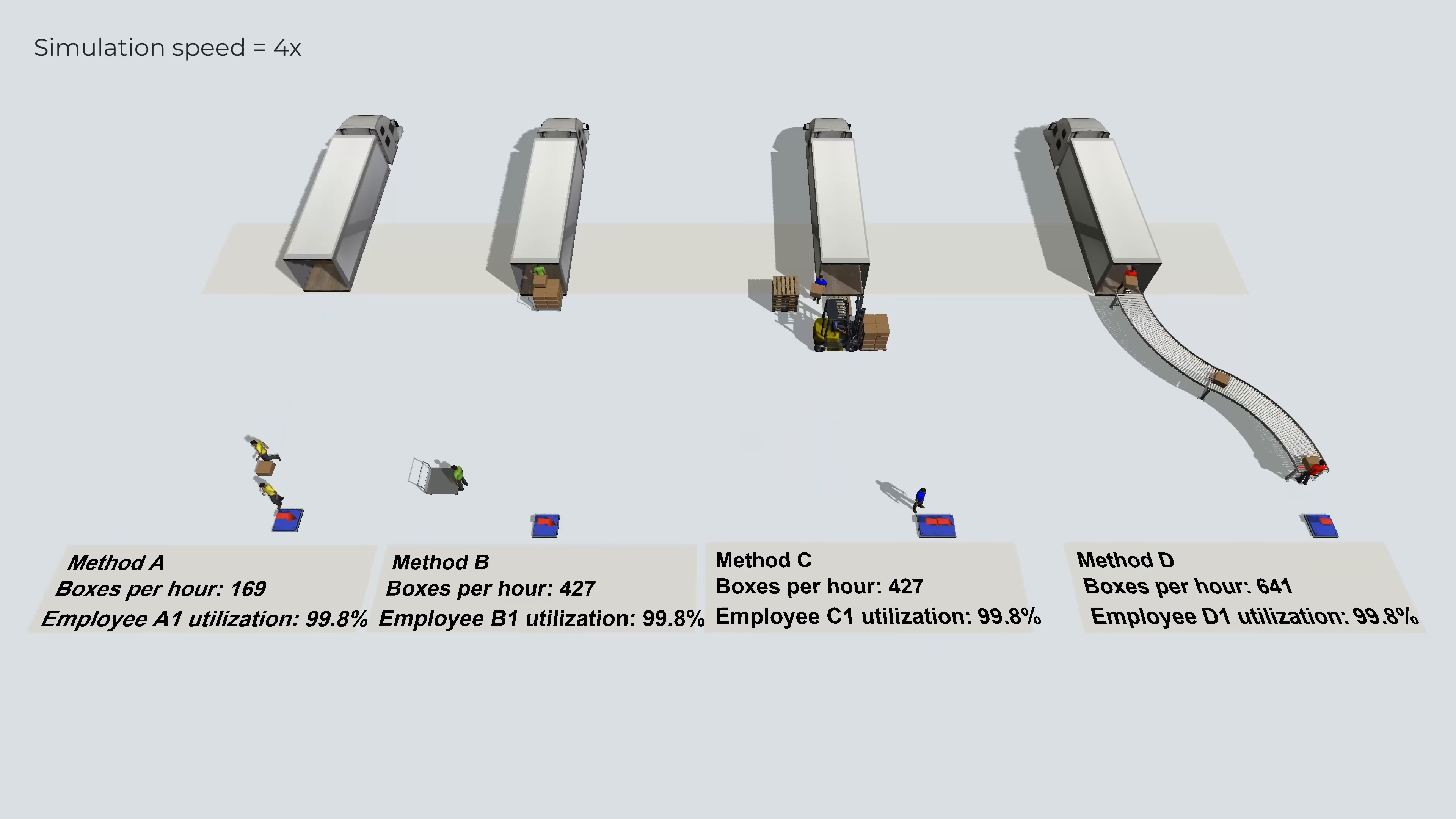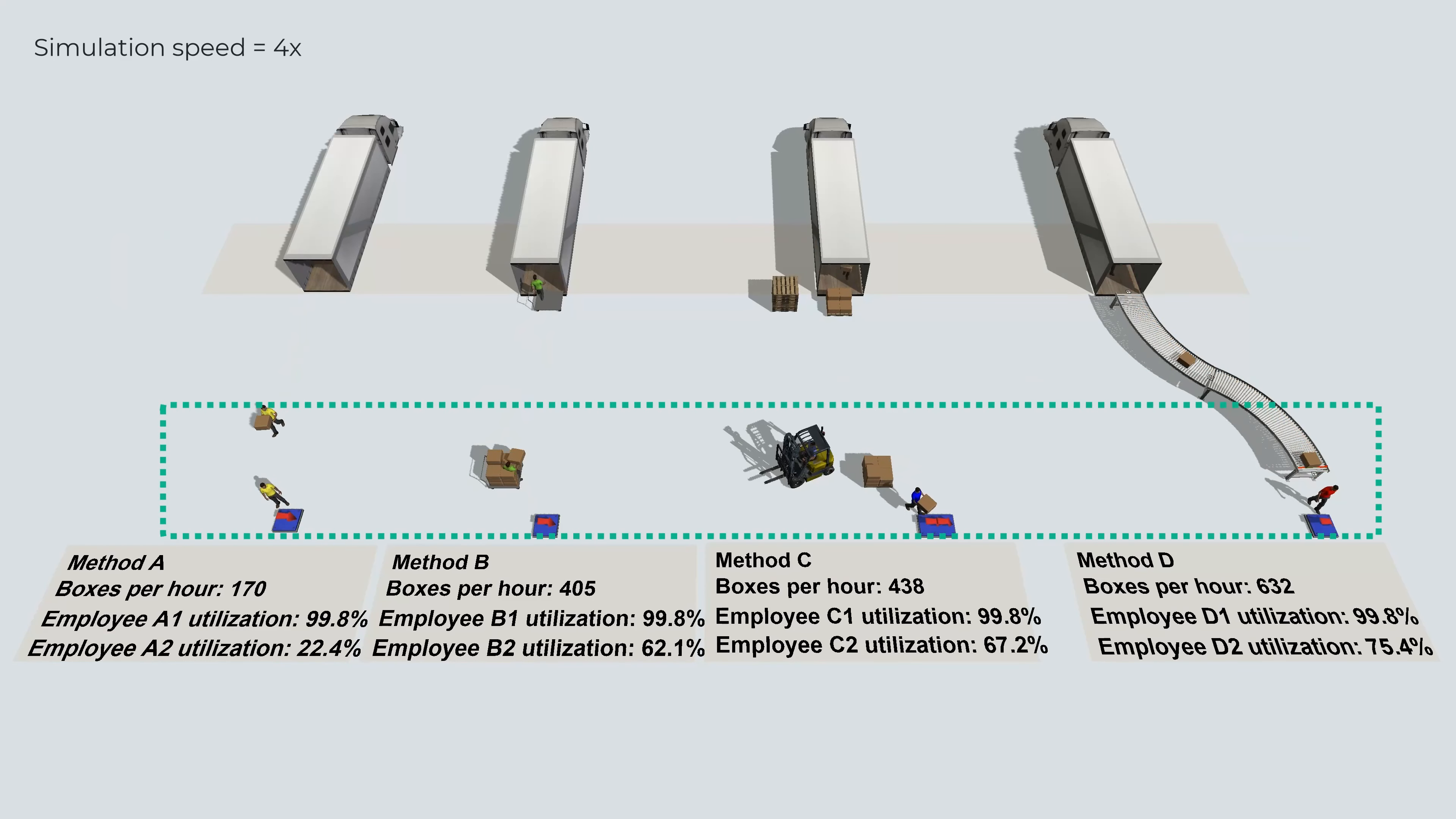As far as the employee utilization, in every case, the employee doing the unloading is working non-stop at a hundred percent. But the employee receiving the boxes works a lot less with method A because he receives a lot less boxes than the others. In methods B, C, and D, which all work about the same on average. But again, we don't show what they do with the boxes as that's out of the scope of this comparison.